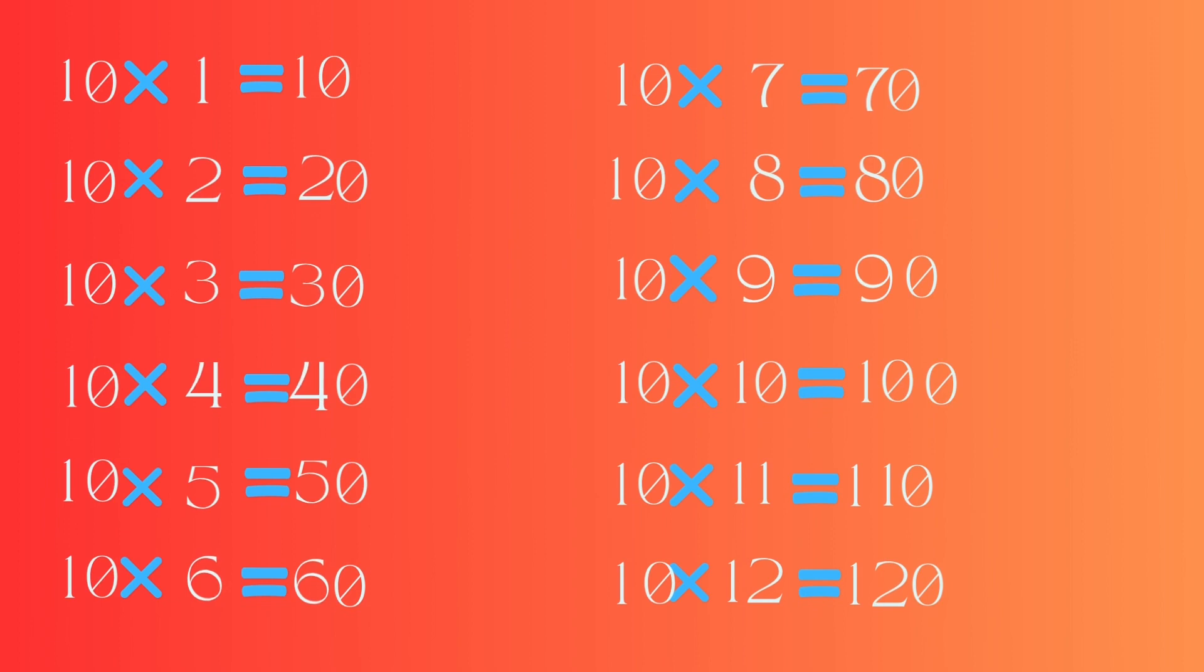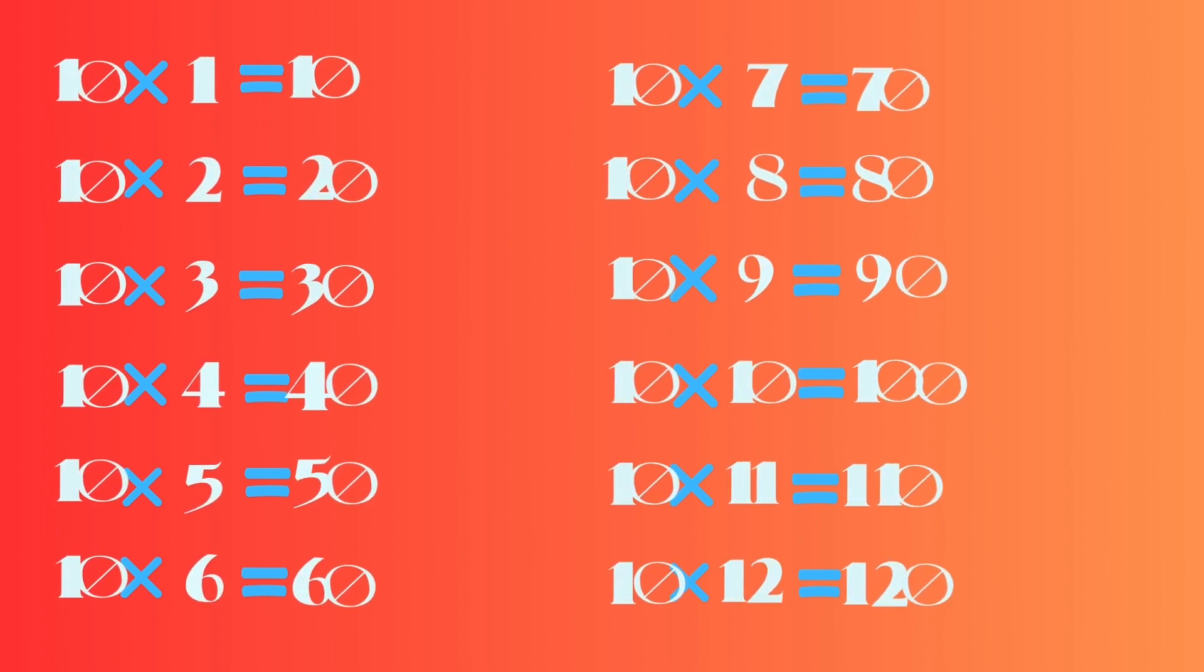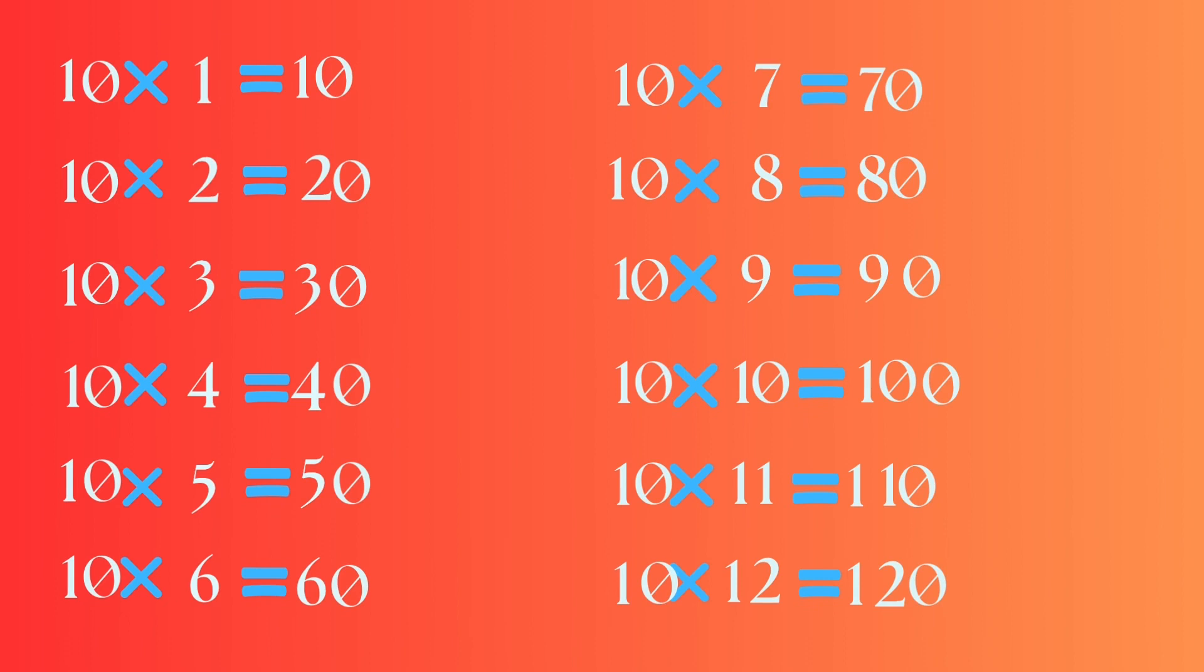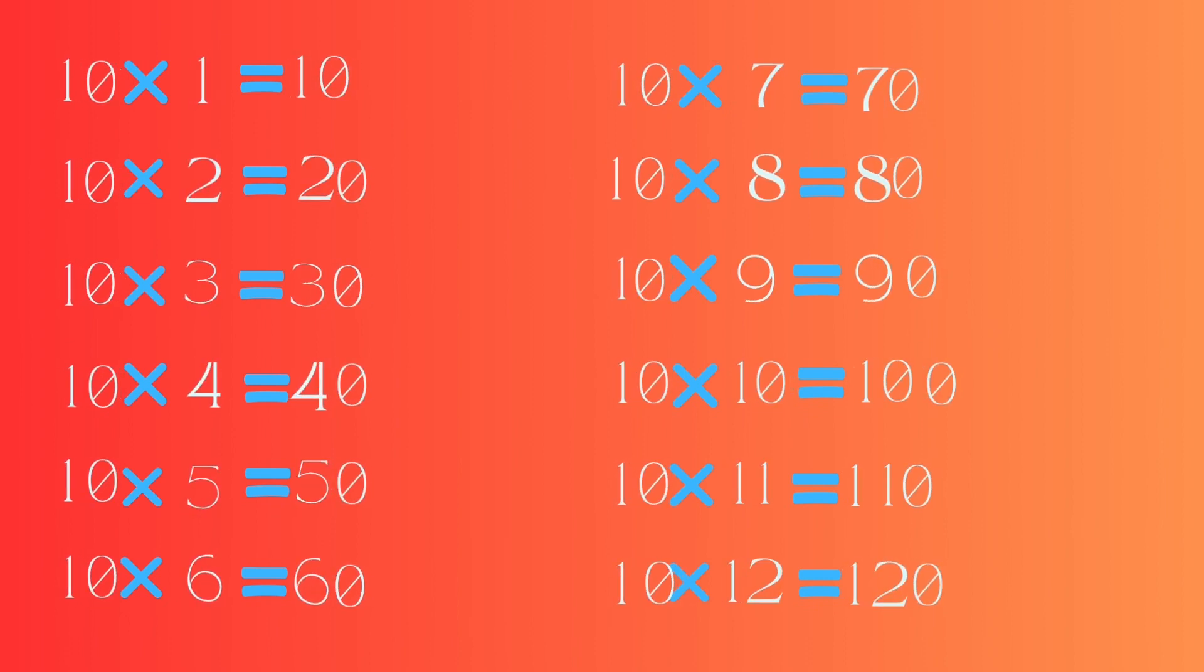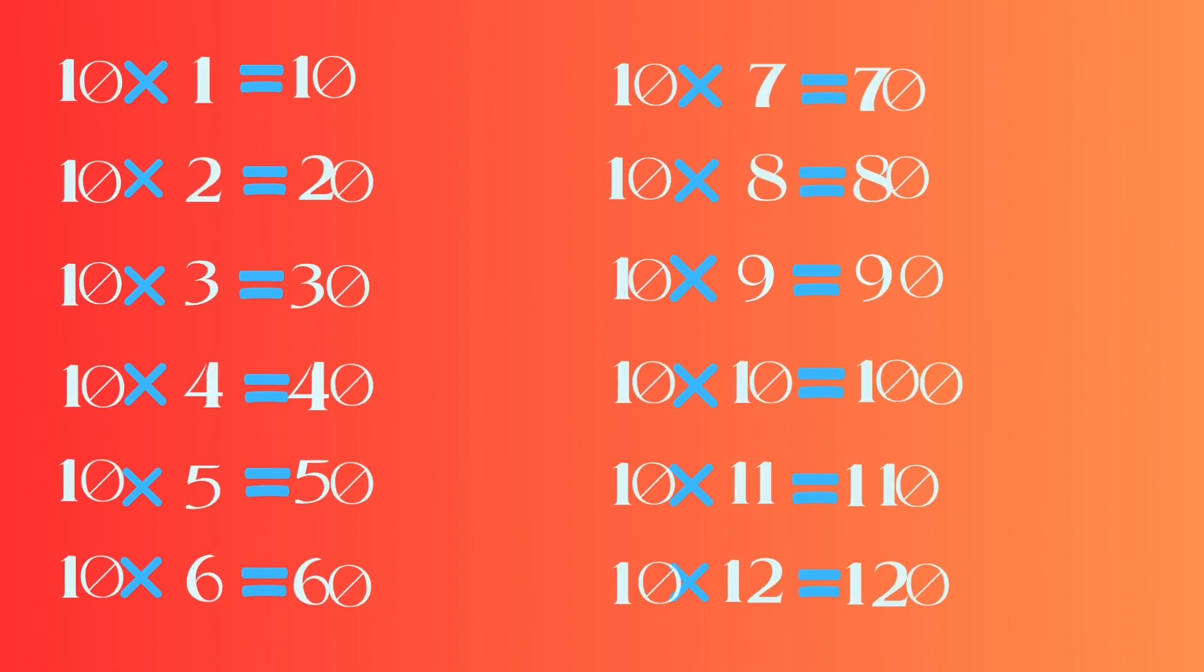10 ones are 10, 10 twos are 20, 10 threes are 30, 10 fours are 40, 10 fives are 50.